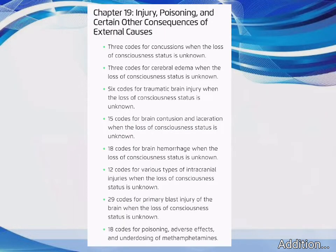Chapter 19 – Injury, Poisoning, and Certain Other Consequences of External Causes: 3 codes for Concussions when the Loss of Consciousness Status is Unknown, 3 codes for Cerebral Edema when the Loss of Consciousness Status is Unknown, 6 codes for Traumatic Brain Injury when the Loss of Consciousness Status is Unknown, 15 codes for Brain Contusion and Laceration when the Loss of Consciousness Status is Unknown, 18 codes for Brain Hemorrhage when the Loss of Consciousness Status is Unknown, 12 codes for Various Types of Intracranial Injuries when the Loss of Consciousness Status is Unknown, 29 codes for Primary Blast Injury of the Brain when the Loss of Consciousness Status is Unknown, and 18 codes for Poisoning, Adverse Effects, and Underdosing of Methamphetamines.